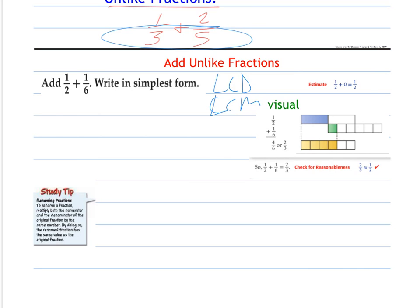What's really important, like we talked about before, is estimating your answer before you do it. So we're going to estimate this: one half is close to one half. One sixth is not very much, closer to zero. So our answer should be close to one half, but a little bit more, obviously, because we're adding more than zero.